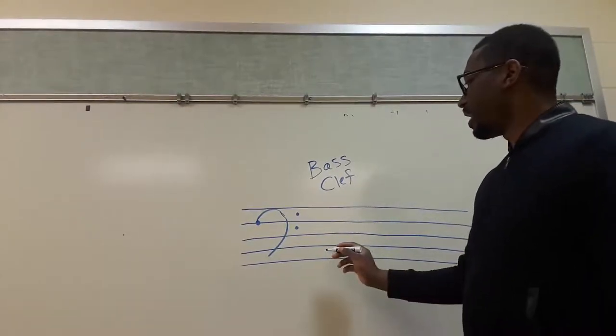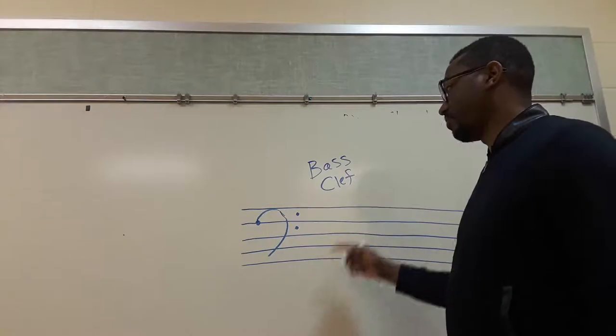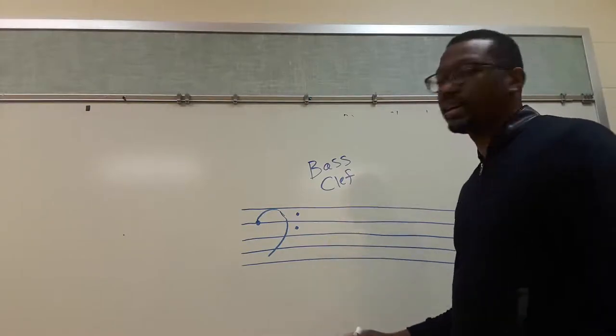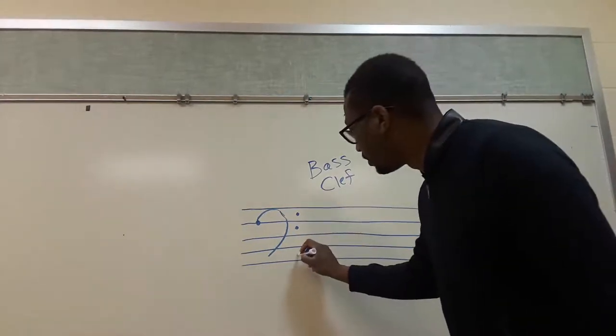So we have five of them, five lines: 1, 2, 3, 4, 5, and the bottom line we'll say is G.